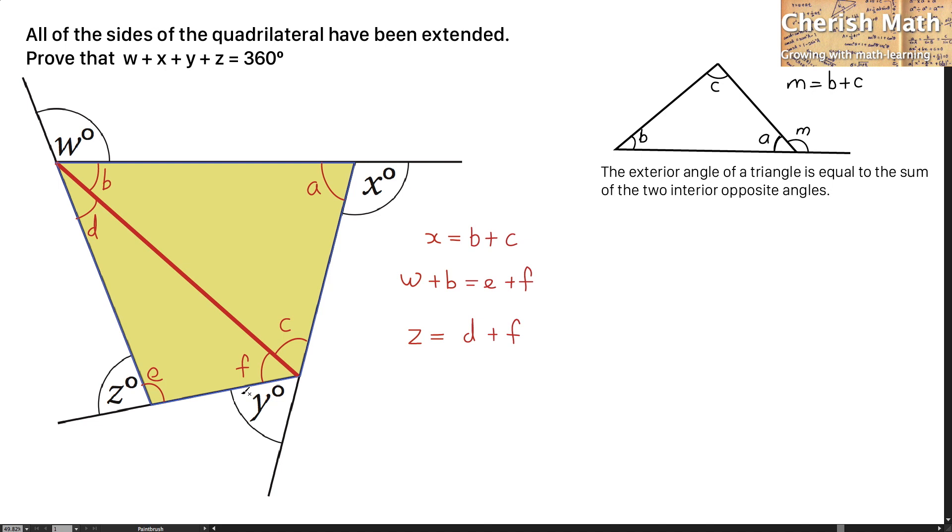And for the last part, I'm taking Y and F together. Y plus F, which is the exterior angle of the triangle located on the top part, is the same as A plus B.